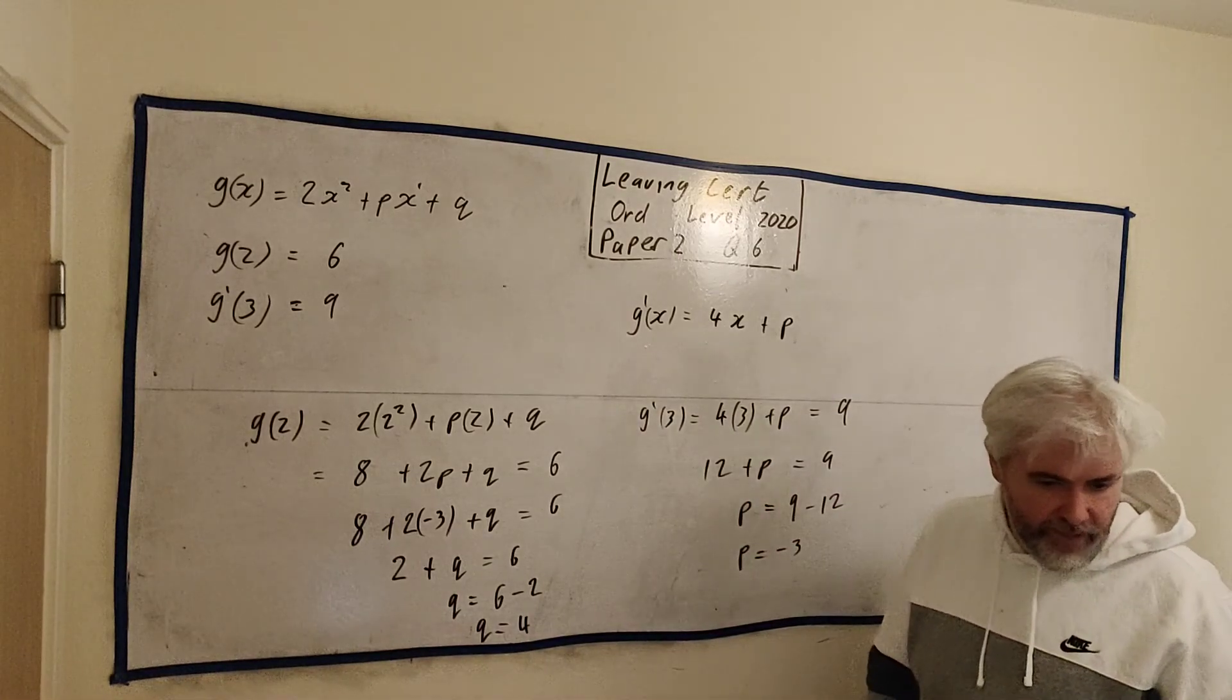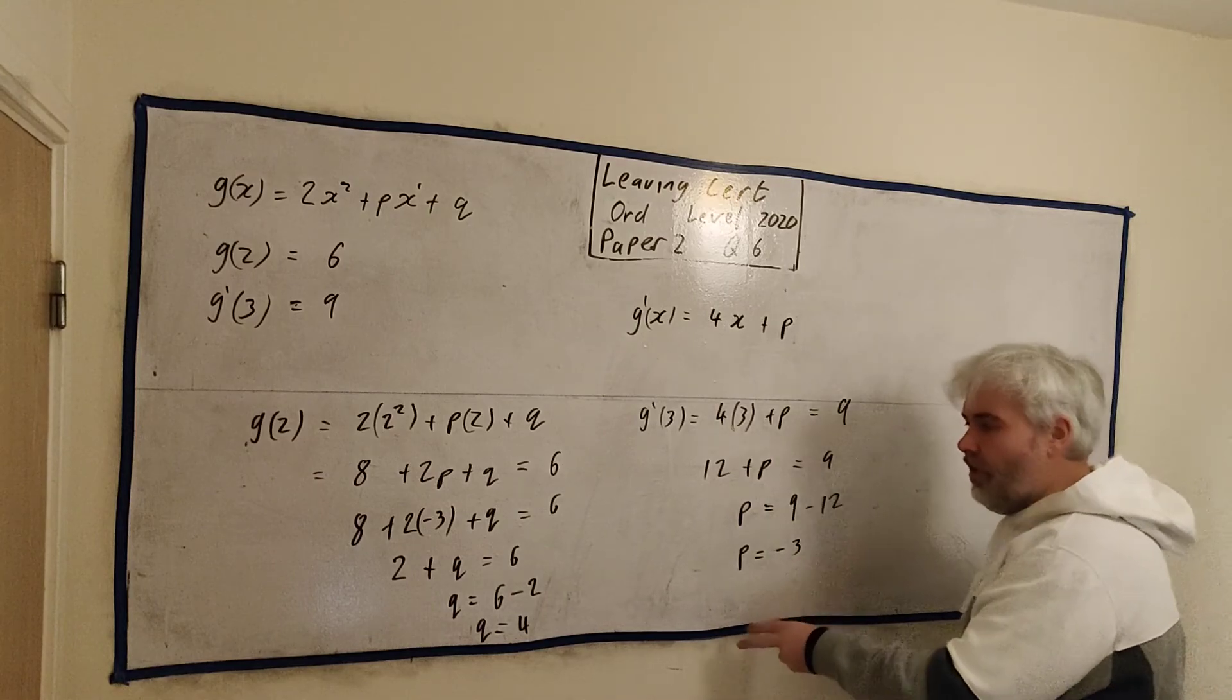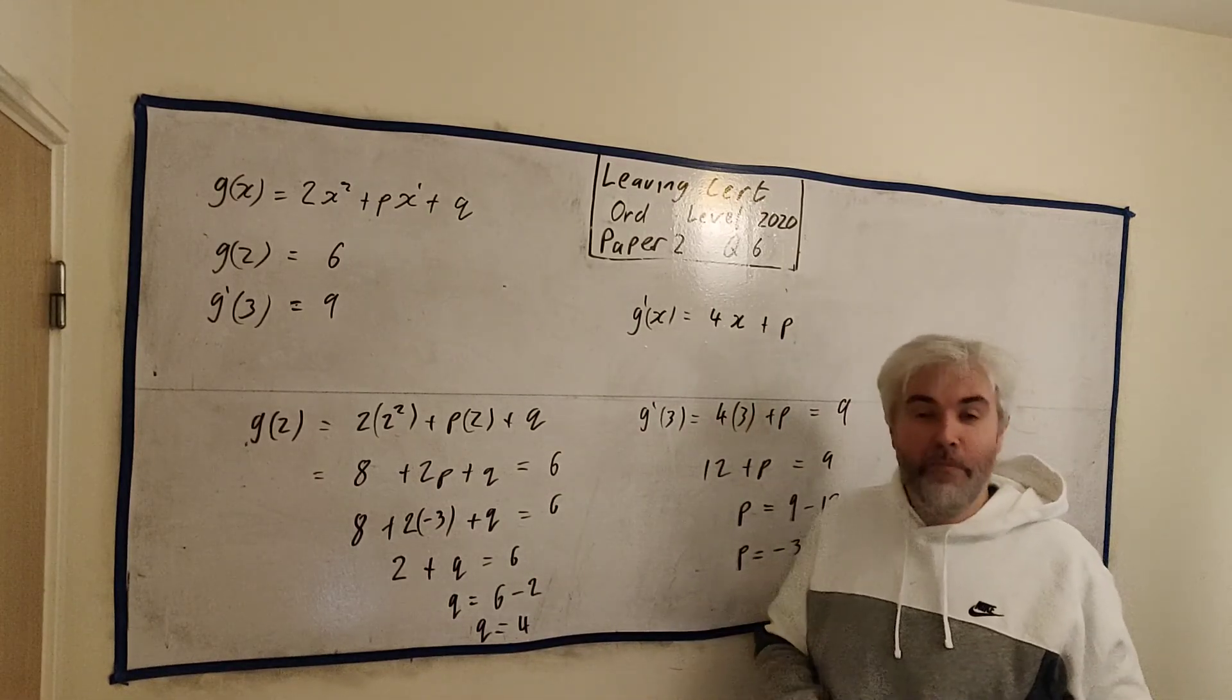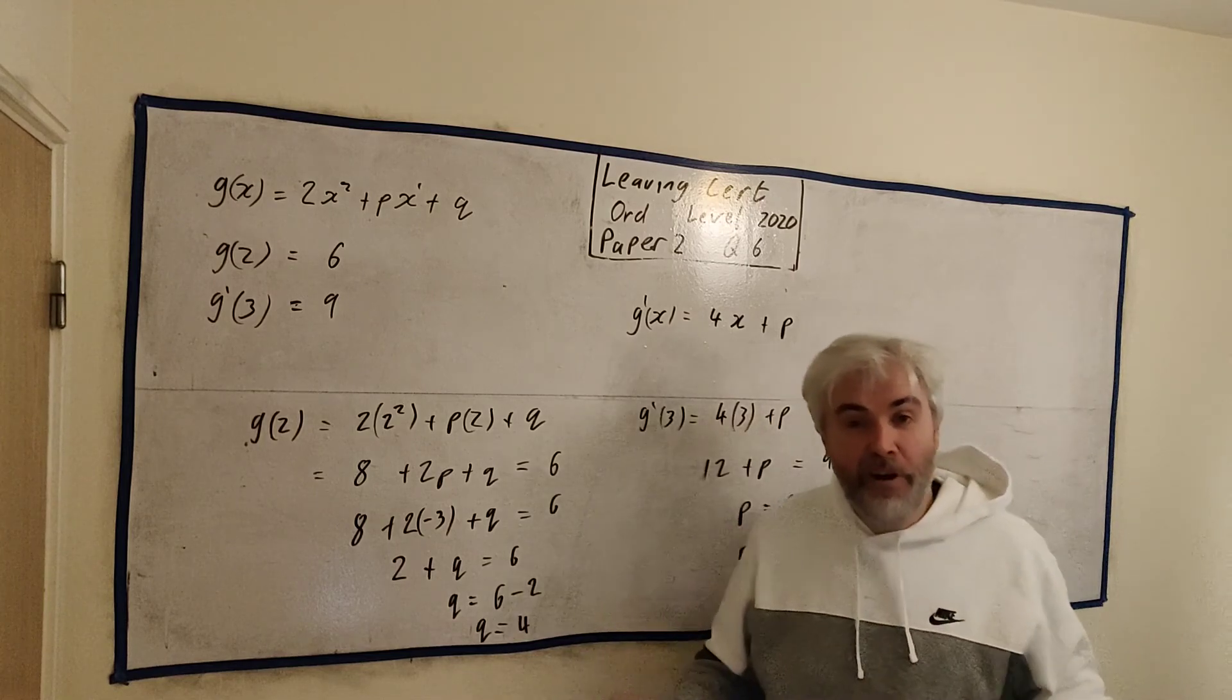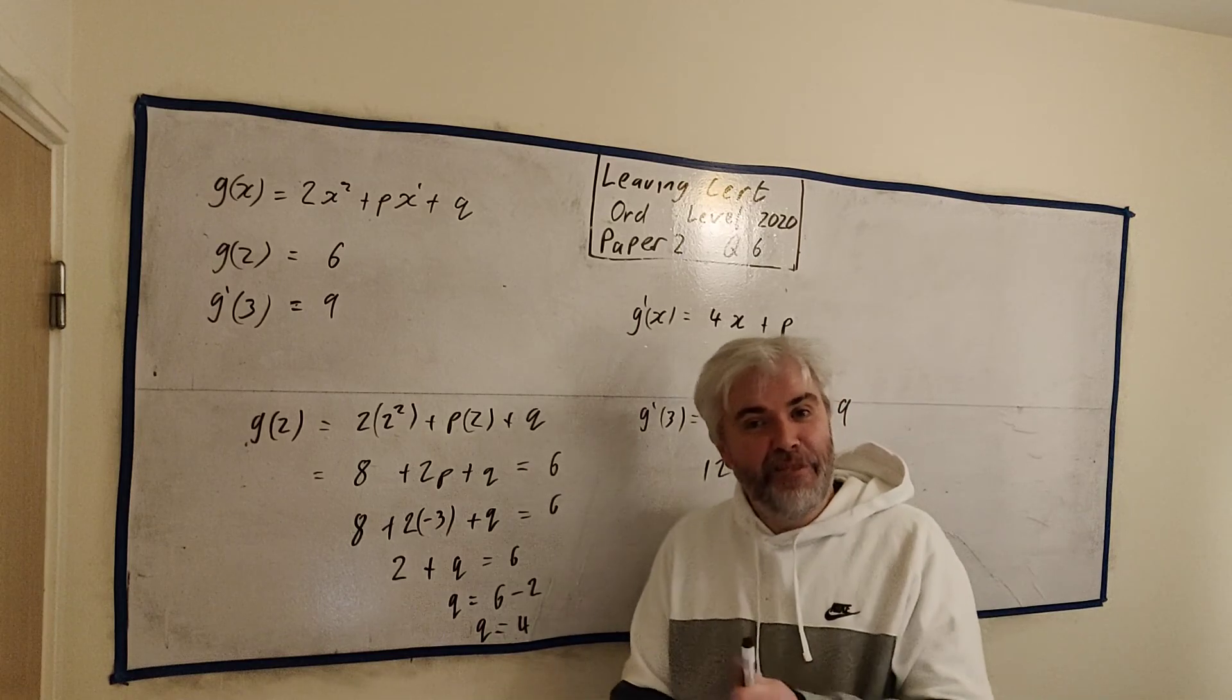And I believe that's all they asked. Let's find the value of p and q. p is -3, q is 4. If you have any follow-up questions on this, or is there anything I did wrong? Let me know in the comments below. I'll do my best to get back to you. Thanks for watching. Have a great day.